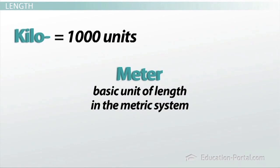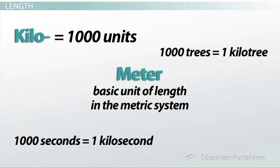Any unit that has the word kilo in front of it is equivalent to 1,000 units. You can attach the prefix kilo to about anything. If something takes 1,000 seconds, it takes a kilosecond. If a forest has 1,000 trees, it has a kilotree. You get the idea.